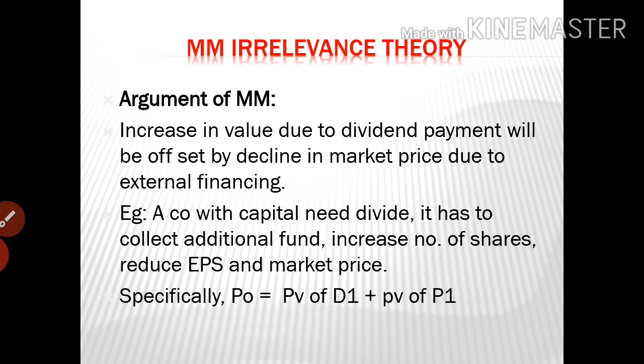A company with a capital need that is giving profit as dividend then has to collect additional funds. This increases the number of shares, which reduces EPS — earnings per share — and the market price will also be reduced.